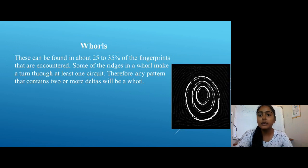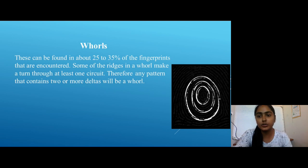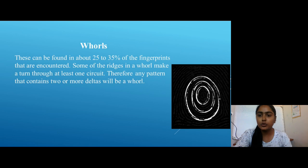The third pattern is Whorls. This can be found in about 25–35% of the fingerprints that are encountered. Some of the ridges in a whorl make a turn through at least one complete circuit. Therefore, any pattern that contains two or more deltas will be classified as a whorl.